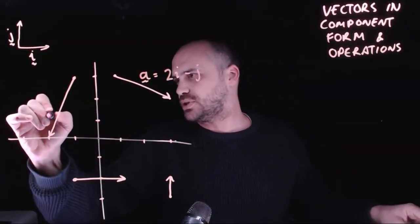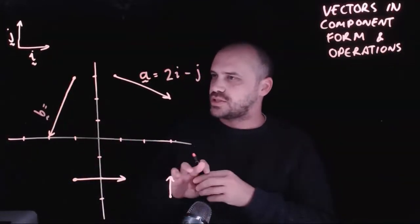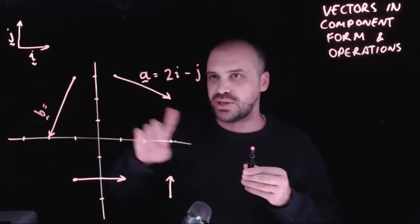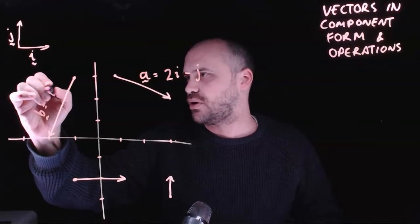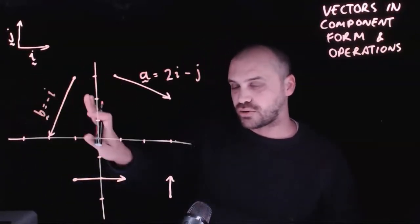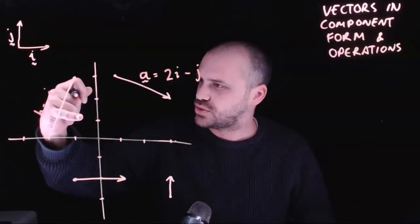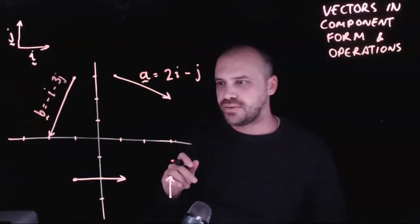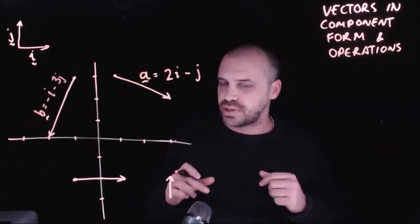This vector here, we'll call this vector b. You can see that it's starting from here and moving this way. So it's negative i, negative one across. It's one, two, three down. So negative three j, and that's it. That's vector b.